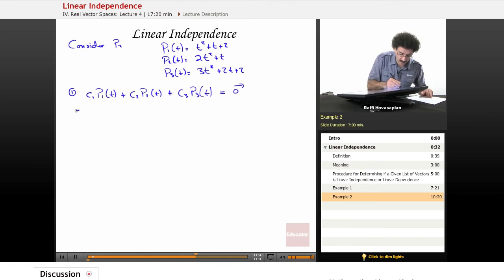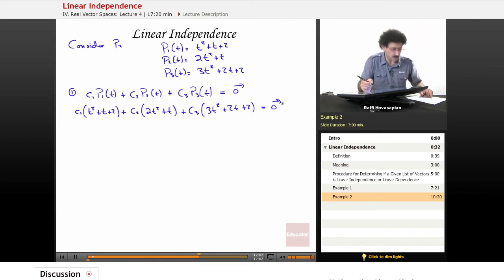Okay, we get C1 times t squared plus t plus 2 plus C2 times 2t squared plus t plus C3 times 3t squared plus 2t plus 2. Okay, equals 0.